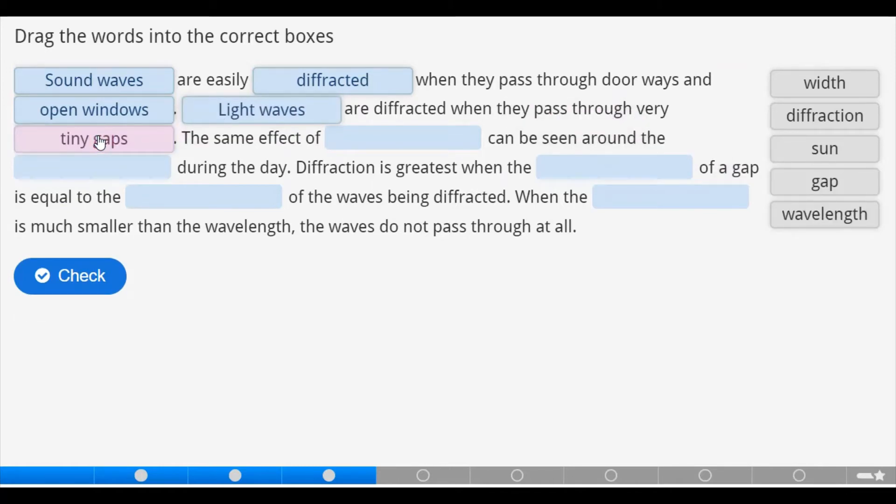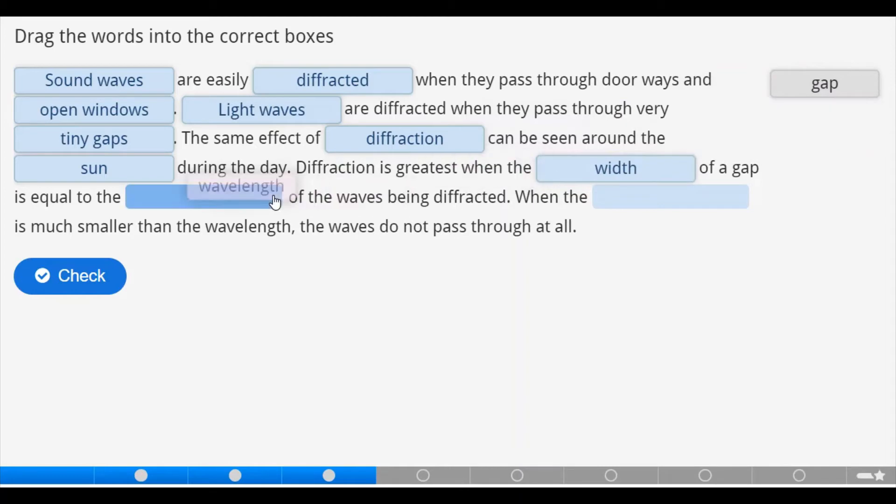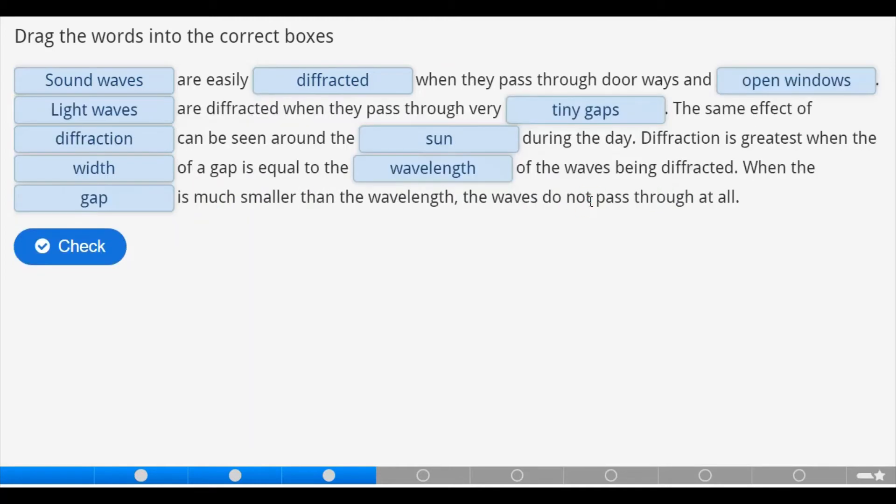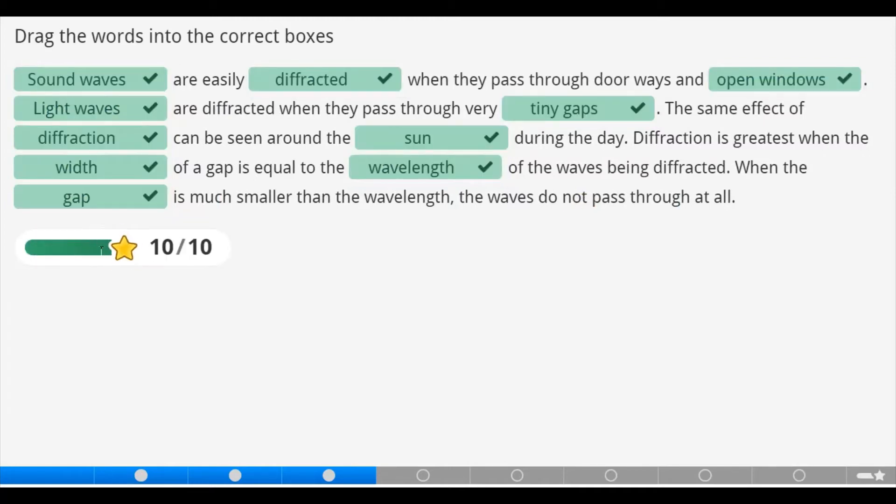Light waves are diffracted when they pass through very tiny gaps. The same effect of diffraction can be seen around the sun during the day. Diffraction is greatest when the width of a gap is equal to the wavelength of the waves being diffracted. The same effect of the winding gap, which is much smaller than the wavelength. The wave does not pass through at all. Let's check. That's correct.